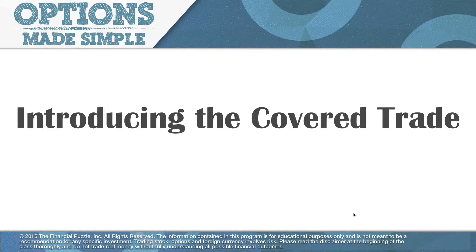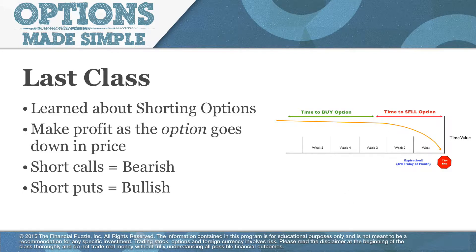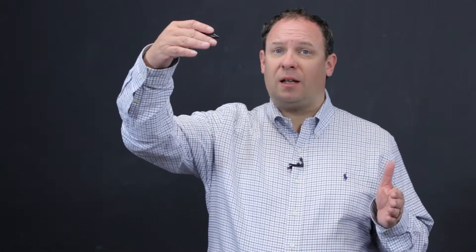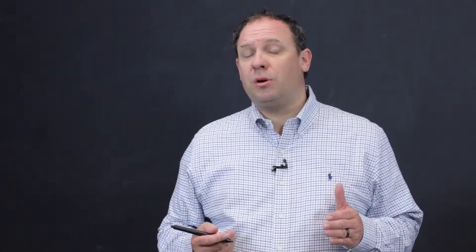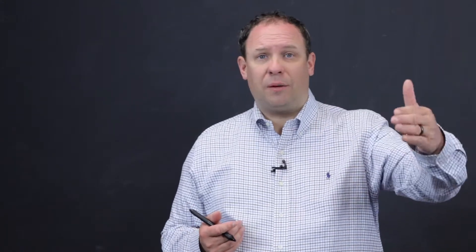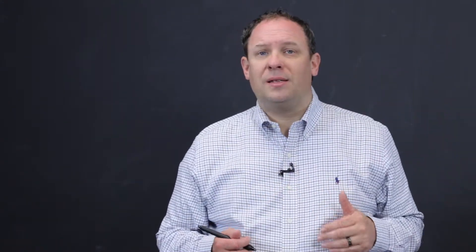In the last class we learned about shorting options — we learned that we can make a profit as the option goes down in price, just the same way we'd make a profit as the stock goes down if we short the stock. If we short the stock, we sell it at a higher price and then buy it back to close at a lower price. The same thing happens when we short an option: we sell it at a price and we want that option price to go down over time.